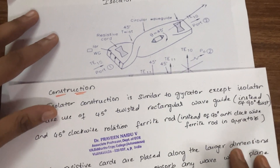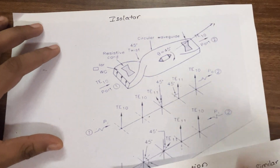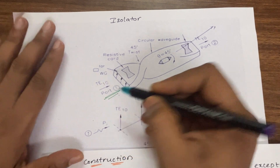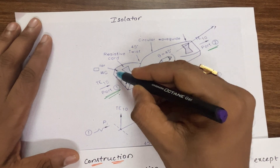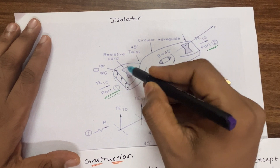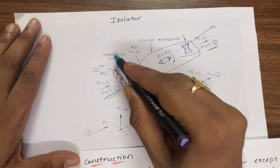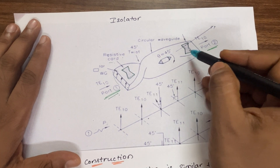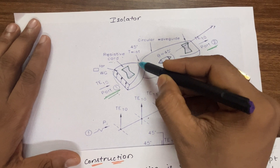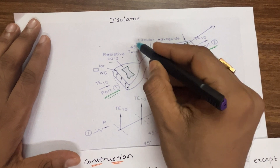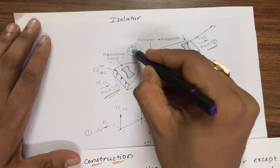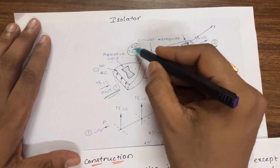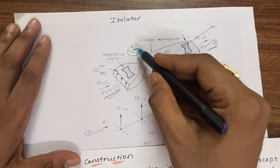Now we will look at the construction of the isolator. This is port number one and this is port number two — this is a rectangular waveguide. An extra component placed here is a resistive card, and one more resistive card on the other side. The purpose of using resistive cards is to absorb power. The rectangular waveguide converts into a circular waveguide with a twist rate of 45 degrees. Note that in the case of the gyrator we had a 90-degree twist, but here we have a 45-degree twist.